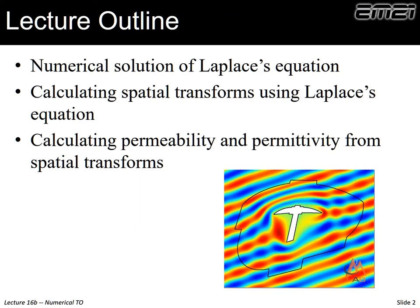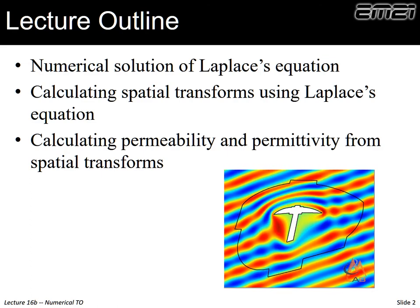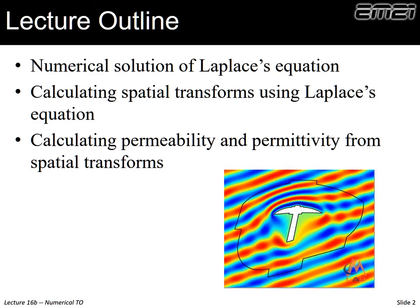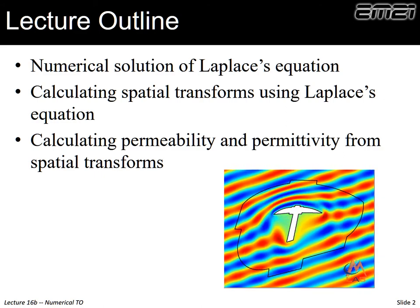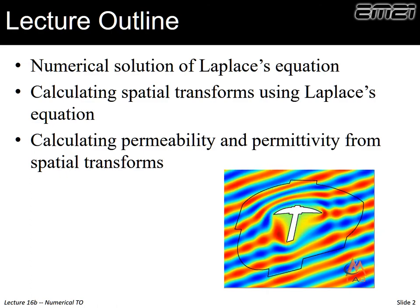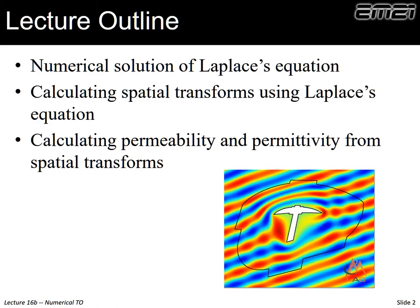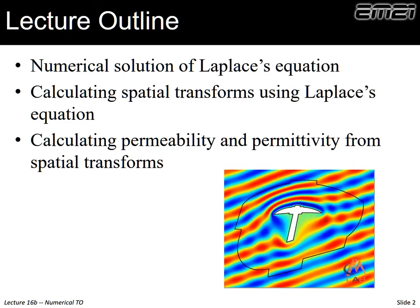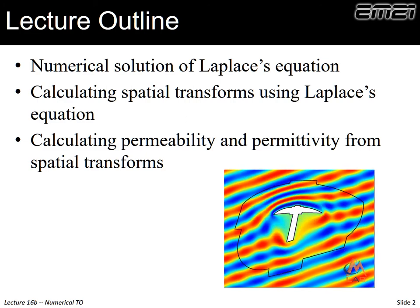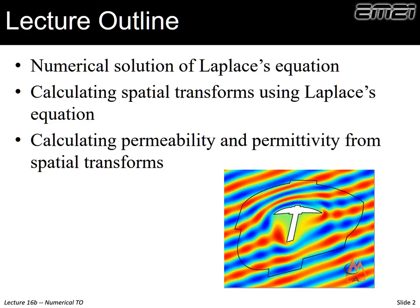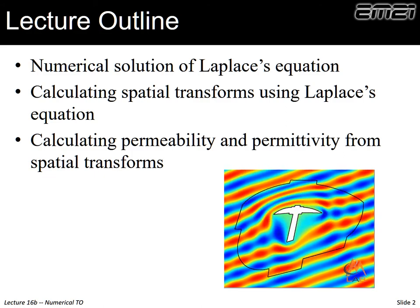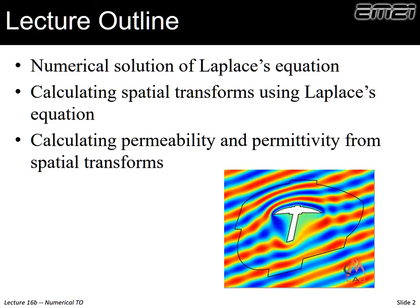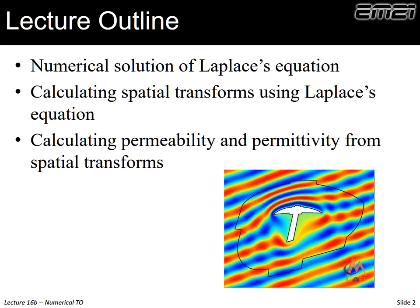The first thing I want to do before we even get into transformation optics is talk about Laplace's equation, because this is what we're going to use to do our spatial transform. We'll look at this to try to get an intuitive feel of really what the solution to Laplace's equation gives. I describe it as an operation to fill in numbers — I informally call it a number filler inner. We'll learn how to do spatial transforms and calculate arbitrary spatial transforms by solving Laplace's equation, and then generate our maps of permeability and permittivity completely numerically.